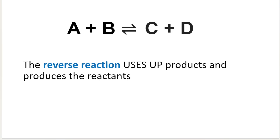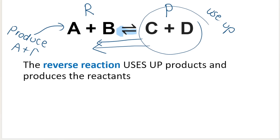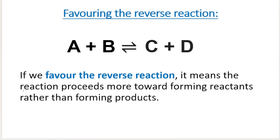The opposite is true for the reverse reaction. The reverse reaction is pointing to the left. The reverse reaction uses up the products — so we use up C and D and we produce A and B. It goes backwards, basically. So if we favor the reverse reaction, what that means is the reaction proceeds more towards forming reactants rather than forming products.